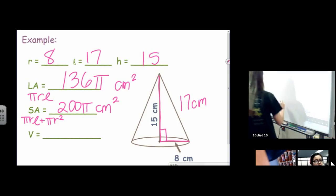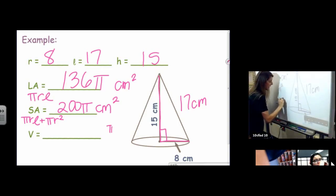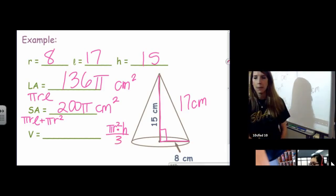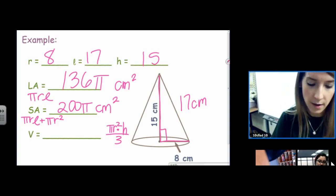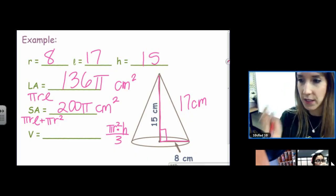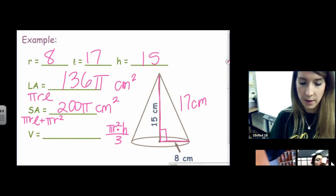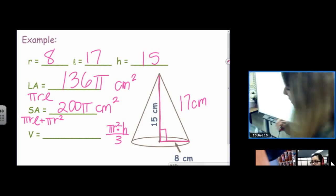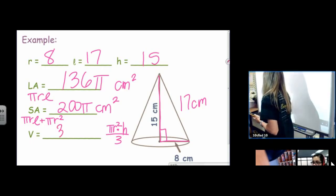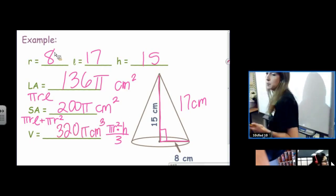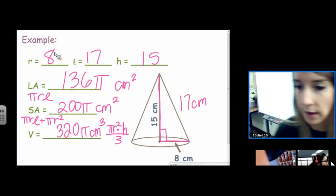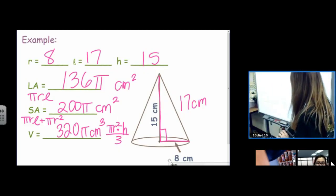All right. Finally, the volume. Base times height divided by 3. I'm going to skip over the pi. So I'm going to do 8² times 15, not the slant height, but the height, divided by 3. That one's pretty as well. So on this one, we did not get a repeating decimal, so we did not have to convert it to a fraction. All right, let's try a composite figure one.